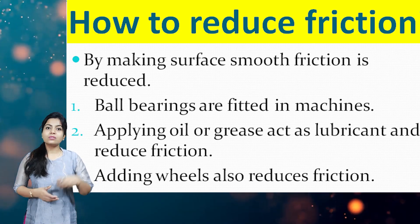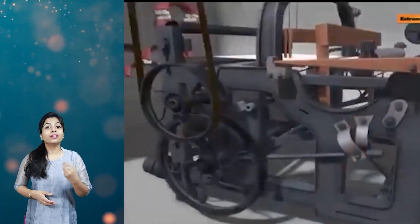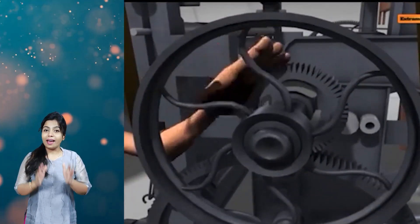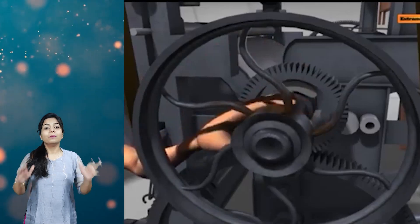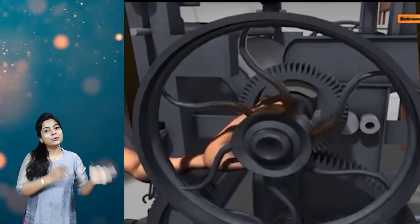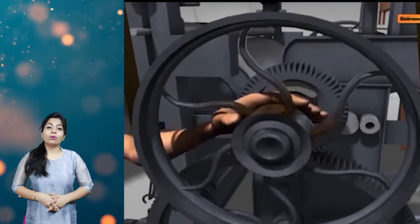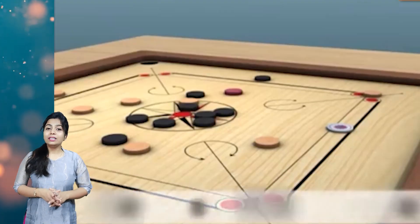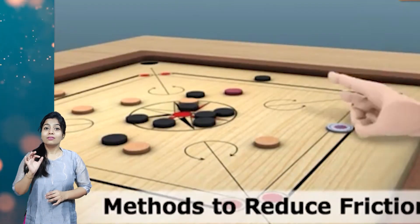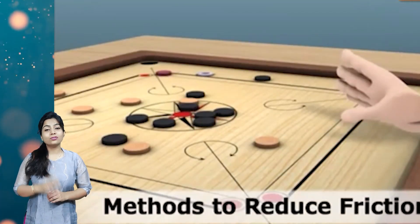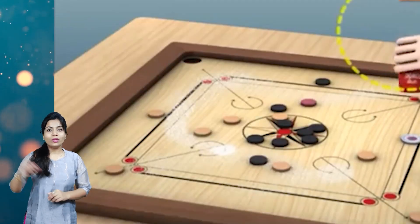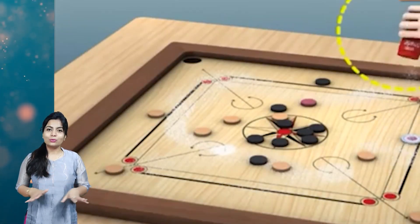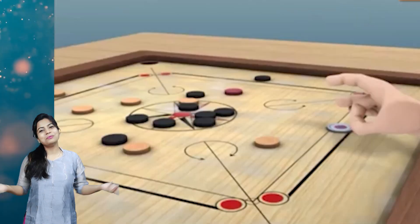In machines, we can apply oil or grease that acts as a lubricant, and the machine works smoothly because it reduces friction. While playing carom, you need to reduce friction when you hit the striker. So you can spray talcum powder over it to reduce friction and then play smoothly.